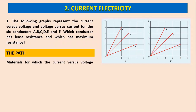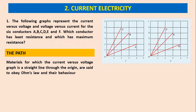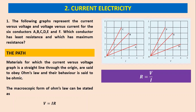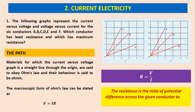Materials for which the current versus voltage graph is a straight line through the origin are said to be obeying Ohm's law. Here all six curves are straight lines passing through the origin, so they obey Ohm's law. The macroscopic form of Ohm's law is V equals current multiplied by resistance. Resistance R equals potential difference V divided by current I. The resistance is the ratio of the potential difference across the given conductor to the current passing through the conductor.